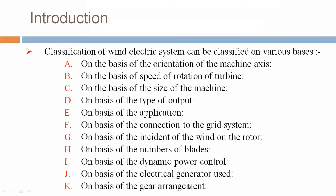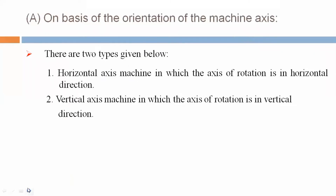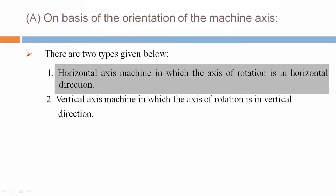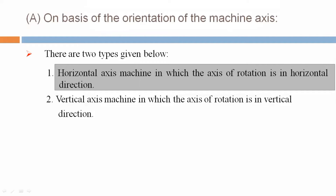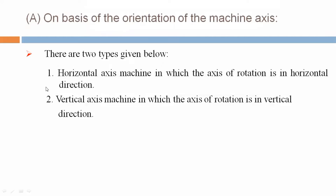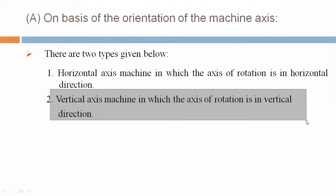Today we will see the classification of aeroturbines one by one in sequence. A: On the basis of the orientation of the machine axis, there are two types. First, horizontal axis machine, in which the axis of rotation is in horizontal direction. Second, vertical axis machine, in which the axis of rotation is in vertical direction.